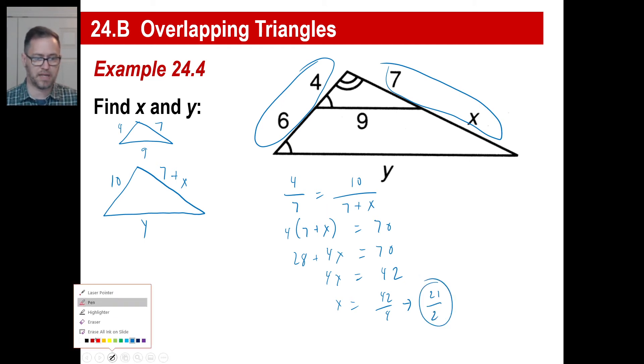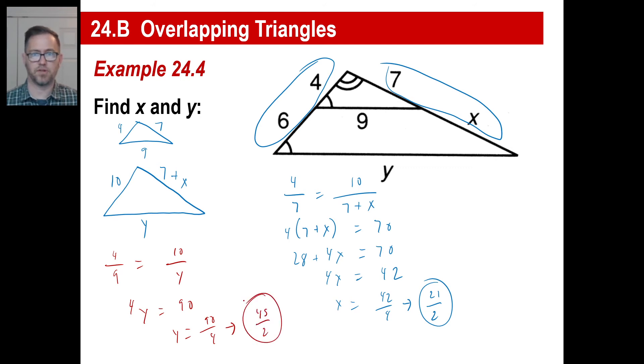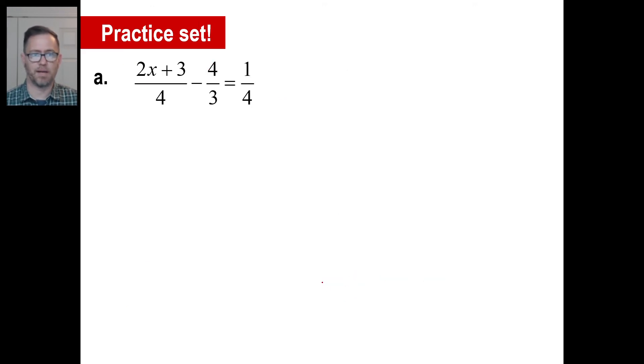Let's take a look at Y. Same exact thing. We just do it a little bit differently here. Four to nine is 10 to Y. Piece of cake, right? Four times Y is 4Y. Nine times 10 is 90. So Y is going to be 90 divided by four or reduced will be 45 over two. There you go. It's the same thing. The only thing different is you end up with an equation like this, which you're going to have to distribute and then solve for X a little teeny bit more involved, but no big deal. And that's it. Overlapping triangles.